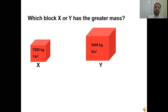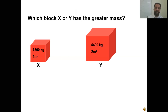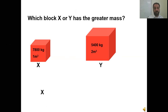Quiz questions are in Google Classroom. Which block — X or Y — has the greatest mass? Block X has a mass of 7,800 grams in 1 meter cube, and block Y has 5,400 grams in 200 meter cube. When you calculate, X has the greater mass of 7,800 grams.